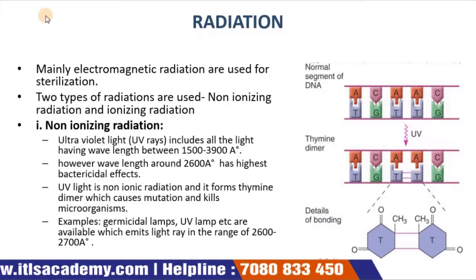The third type of physical agent is radiation. Mainly electric and electromagnetic radiations are used for sterilization. Two types are used: non-ionizing radiation and ionizing radiation. Ionizing radiation includes X-rays, gamma rays, and high-energy electron beams, which are strong enough to pass into the cell where they alter molecular structure and damage cell components.